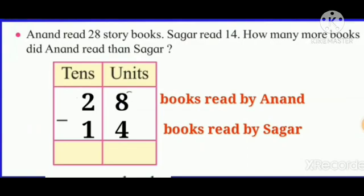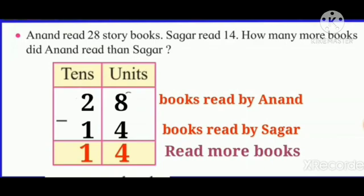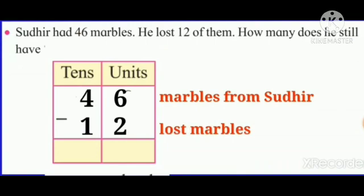Next example: Anand read 28 story books. How many more books did Anand read than Sagar? Books read by Anand: 28. Books read by Sagar: 14. So here 8 minus 4 is equal to 4, and 2 minus 1 is equal to 1. So 28 minus 14 is equal to 14. That means Anand read 14 more books than Sagar.